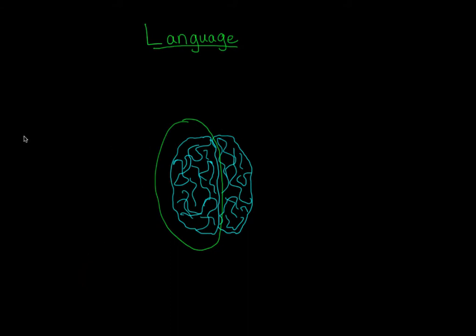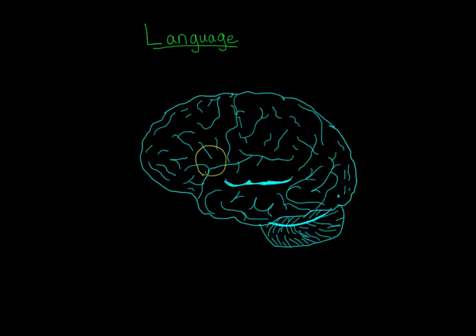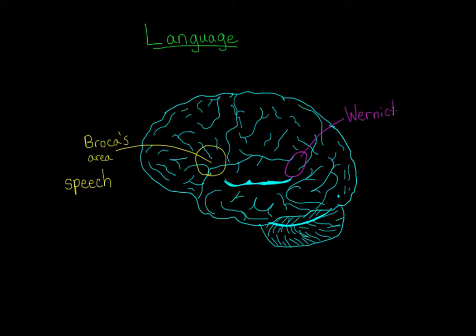Within whichever hemisphere is dominant, the two main areas associated with language are Broca's area, which helps us speak, and Wernicke's area, which helps us understand language. Broca's area is in the frontal lobe, usually the left frontal lobe, and it's responsible for language expression.